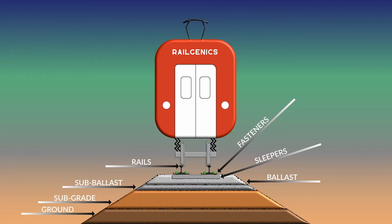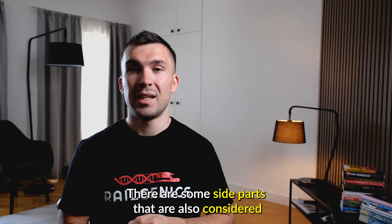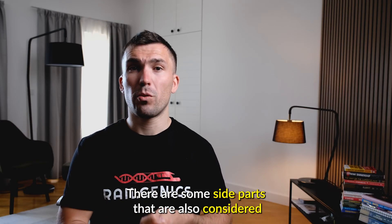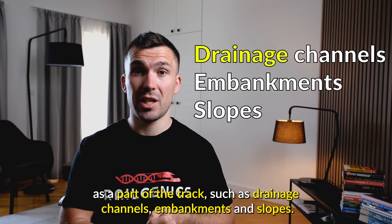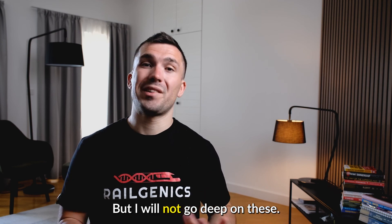Beneath ballast we have one layer called sub-ballast. The difference between ballast and sub-ballast is in layer thickness but also in rock size. Its main role is to act as a filter and drainage layer. The last layer is called subgrade, and it is well-prepared solid ground to compensate for unevenness and support the upper elements of the track. Below subgrade is the ground. There are also some side parts considered part of the track such as drainage channels, embankments, and slopes, but I will not go deep on these.